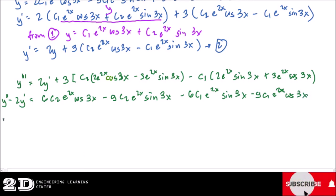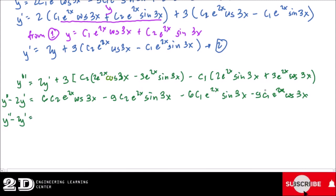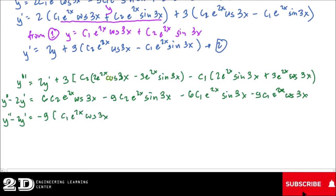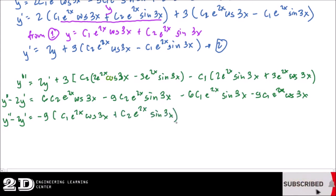We will group terms with the same constant coefficients. Let's factor out negative 9 first. So we have negative 9 times c1·e^(2x)·cos(3x) plus c2·e^(2x)·sin(3x). Then for the terms with 6, we have positive 6 times a parenthesis. The coefficient of negative 9 is factored out, so the c2 term inside becomes positive.